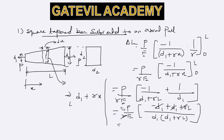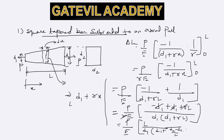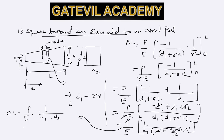After applying the limits and simplifying, with gamma equal to (d2 minus d1) by L, the L cancels appropriately, and the final expression for elongation of the square tapered bar is P L divided by (E times d1 times d2). This is the expression for a square tapered bar with sides d1 at one end and d2 at the other.